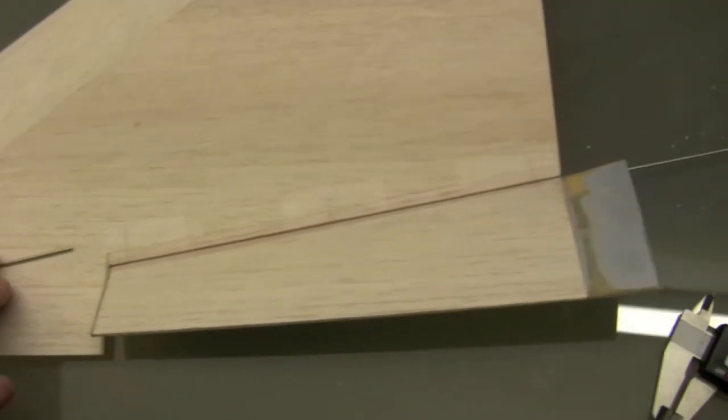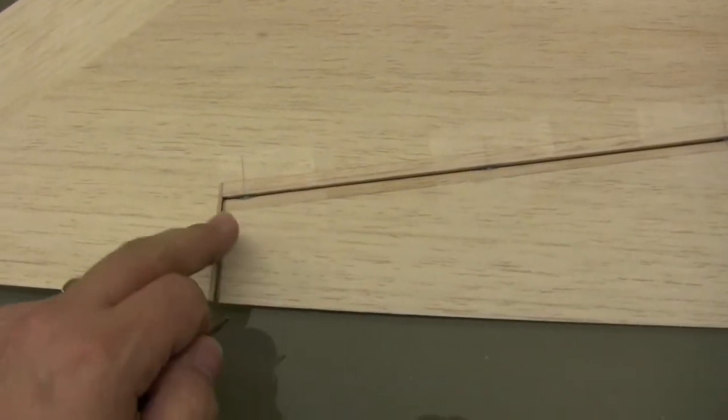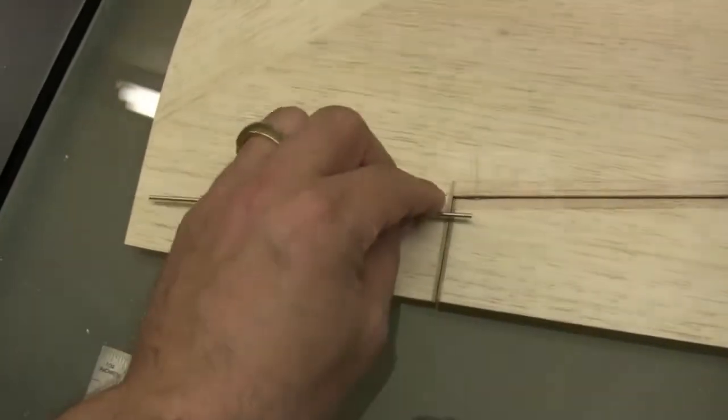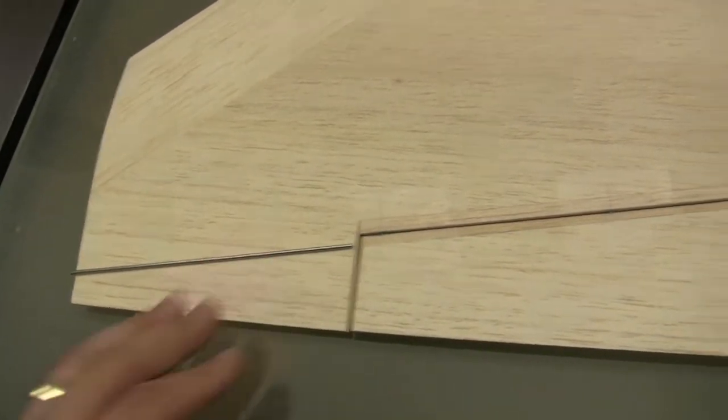And that will pretty much finalize the wing. So I'm going to go ahead and make my mark right here, drill a hole and do that whole process that I just discussed, and we'll pretty much be done with that wing.